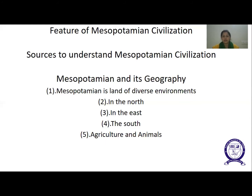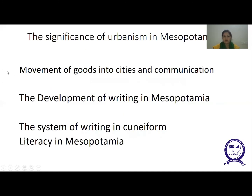Not only in agriculture — Mesopotamian sheep and goats that grazed the steppe, the northeastern plains, and the mountain slopes produced meat, milk, and wool on a large scale. Fish was also available in rivers, and date palms gave fruits in summer. So those were the geographical features of Mesopotamia.